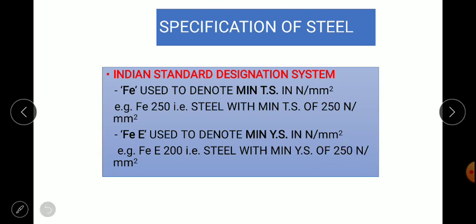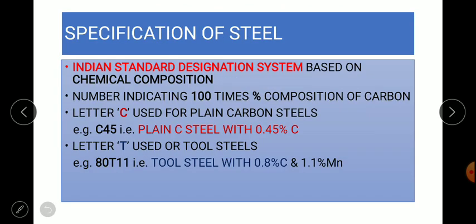Next example is C 45, again an Indian standard designation. What does C 45 indicate? C letter indicates it's a type of plain carbon steel, whereas the numeral values divided by 100 indicates the percentage of carbon. So 45 divided by 100 is 0.45 percent of carbon. C 45 is a plain carbon steel with 0.45 percent carbon.